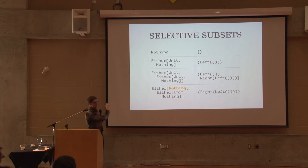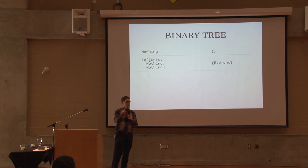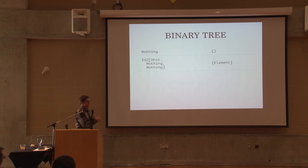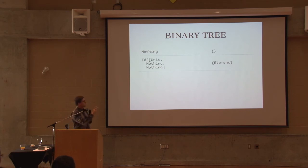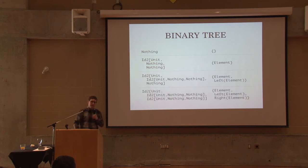One way to improve this is to change from a unary representation to a binary one — from a list to a tree. Instead of using an Either with two alternatives where one is used for Unit or Nothing, we'll have three alternatives: one for Unit or Nothing, and two for creating sub-branches in the tree. We name this type Id2 to remind you it creates a binary tree, and name the constructor 'element' instead of 'middle of unit'. Now we have two Nothings to replace, so we can add two elements, with the last two at the same depth in the tree.